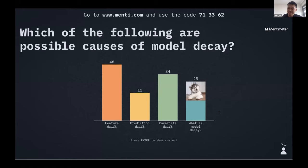So feature drift and covariate drifts are causes of model decay. And most of us have avoided the trick question, which is prediction drift. Prediction drift is actually a result or effect of model decay, because what you would be outputting normally have changed.